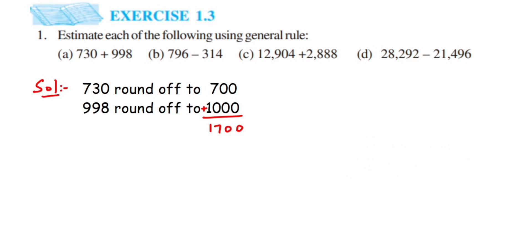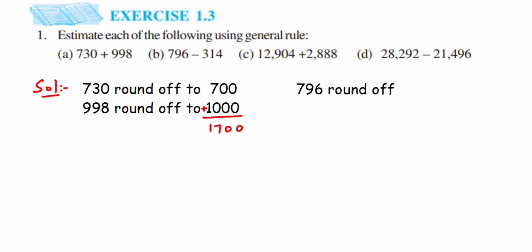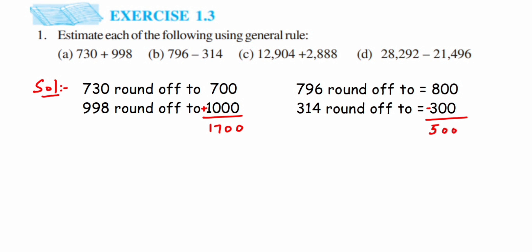Writing it down: 796 rounded off equals 800, and 314 rounded off equals 300. The operation is subtraction, so 800 minus 300 equals 500. The estimated difference is 500.